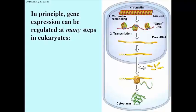Then of course we have transcription, and we make a pre-messenger RNA. We have different kinds of transcript processing — if it's a ribosomal RNA it undergoes a cleavage-based processing. For mRNA processing, which is pictured here, we have splicing, 5' end capping, and 3' end addition of a poly-A tail. Those are discrete steps, any one of which in theory is subject to controls.